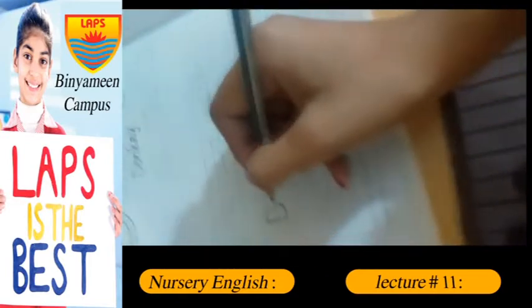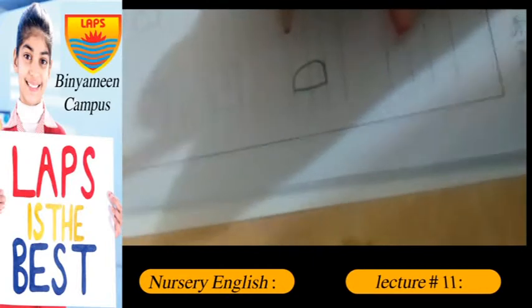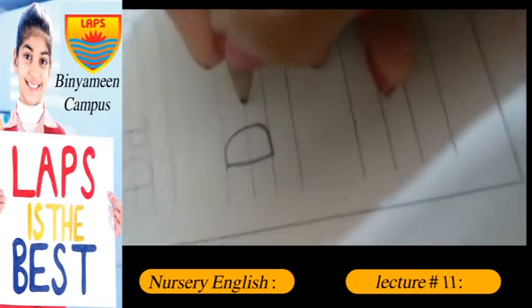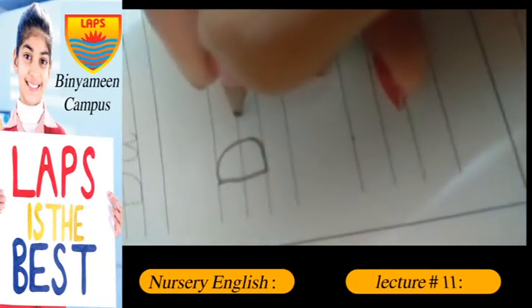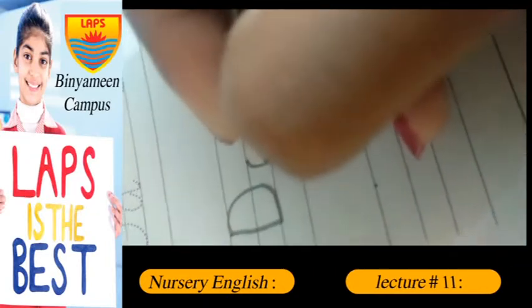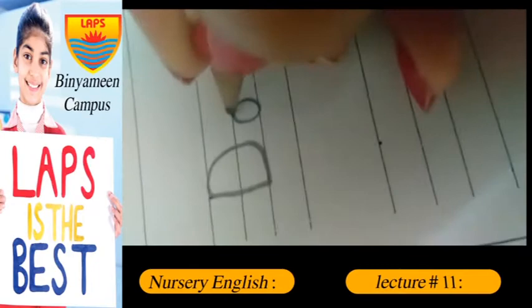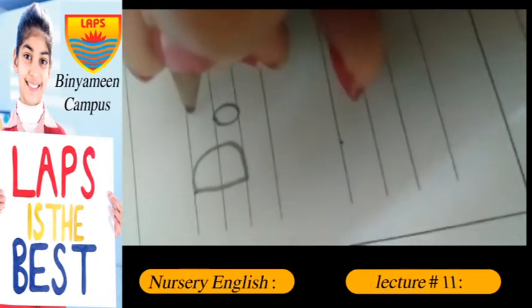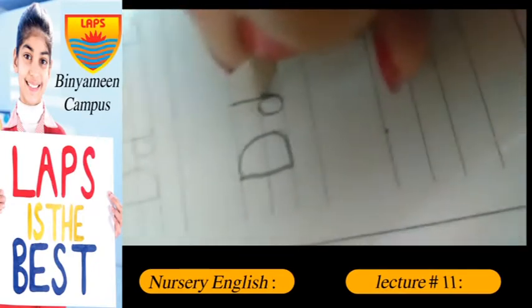And small D is an easy method. Let's make a circle, then we have a line here.